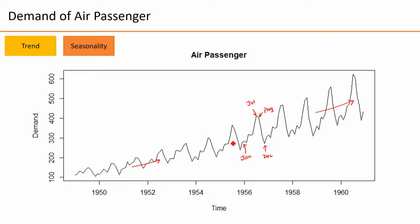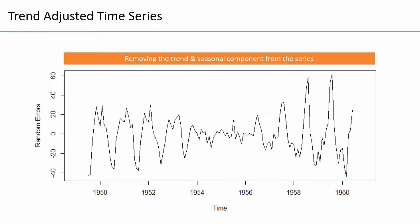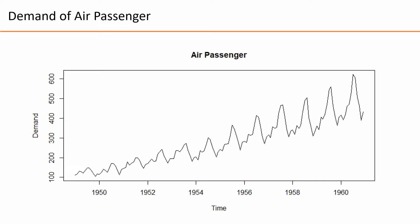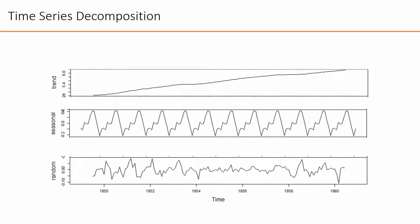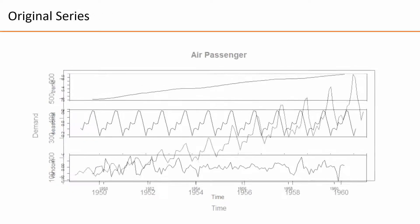If you remove the trend from the series, it leaves you with a series without a trend — the trend becomes a flat horizontal line, meaning there is no trend, but the graph still has seasonality. If you then remove the seasonality as well, that leaves you with a component that is really hard to determine — we call this the random or irregular component. So a time series can be decomposed into three components: trend, seasonality, and random. If you join these components back together, you get the original series.